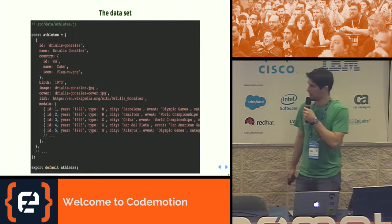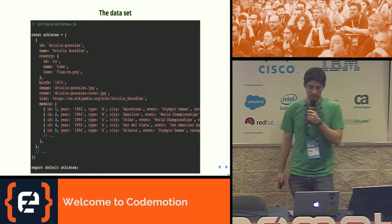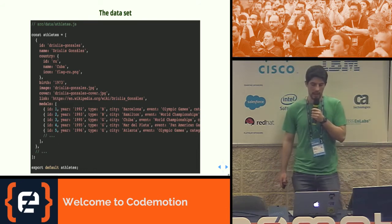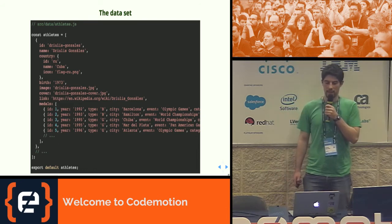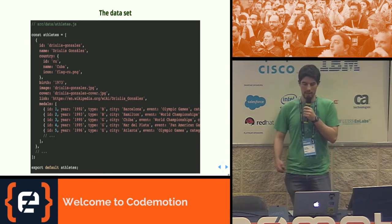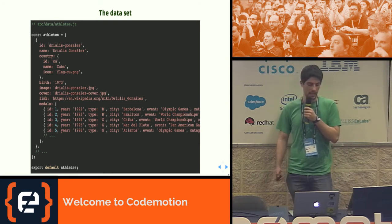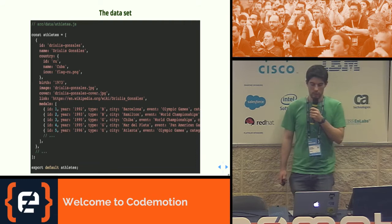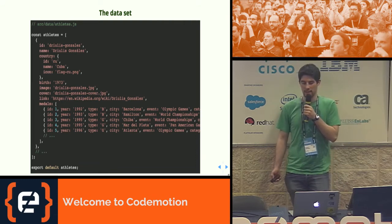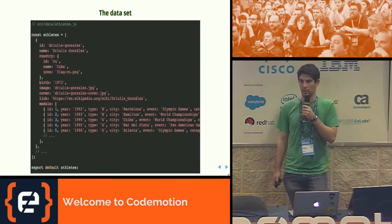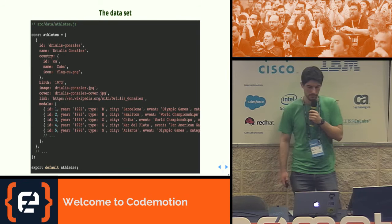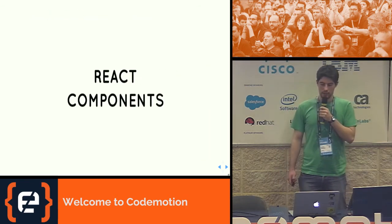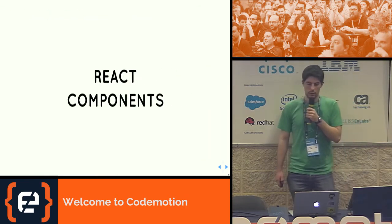The dataset looks like this: we have a big array called 'athletes' and every athlete is an object with properties like an ID, name, country (which is an object itself), and other data like medals linked to Wikipedia pages. You can imagine that if you had an API, this is the response you would get for every athlete.